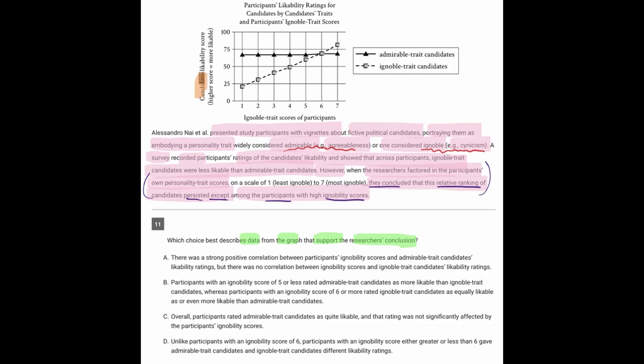So what might be confusing about this graph is that we have the candidates, which are here, the candidates' likability scores. That's the y-axis. And then we have the participants, the people who participated in the study.